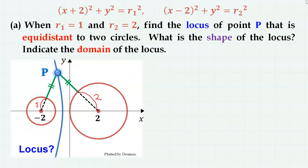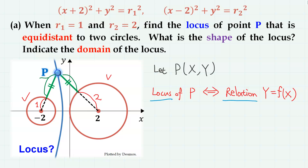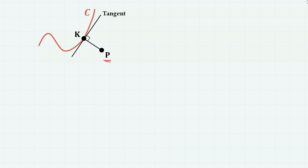The problem is pretty straightforward. For the first case, two circles are given, and point P is equidistant to two circles. We let P as capital letter X and capital letter Y. Finding the locus of P means finding the relation between X and Y. In order to find that relation, we must utilize this equidistant condition. But how can we calculate the distance between a point and a circle?